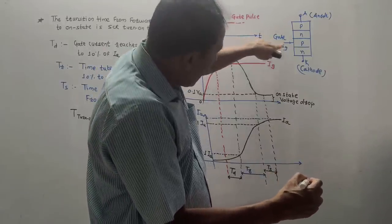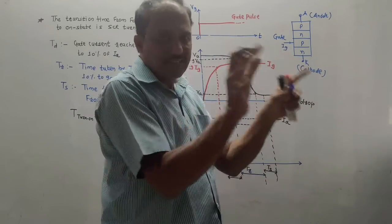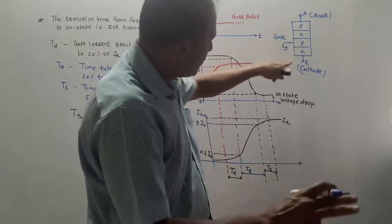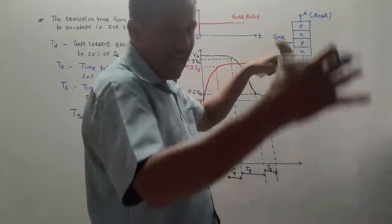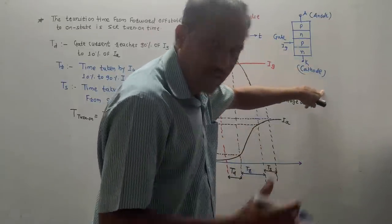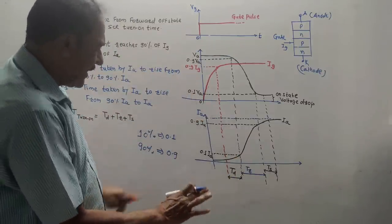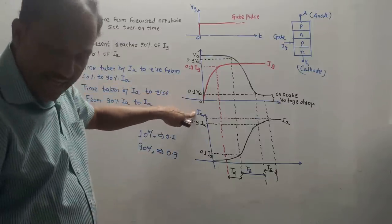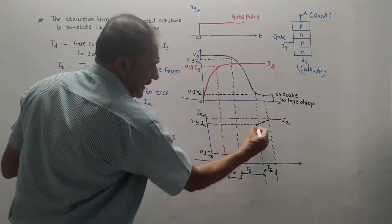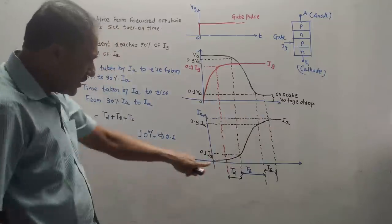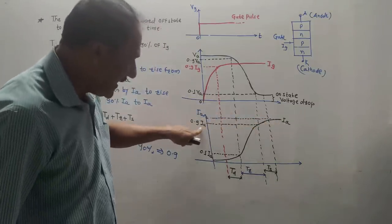The gate pulse is applied to the P region. The distribution of gate current is non-uniform — as the current flows from gate to cathode terminal, the amount goes on decreasing. This graph shows IA (anode current) versus time. The anode current remains constant, then increases exponentially, then finally remains constant. I have marked 0.1 IA (10% of final value) and 0.9 IA (90% of final value).